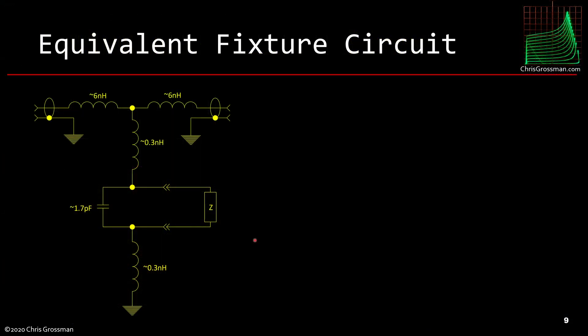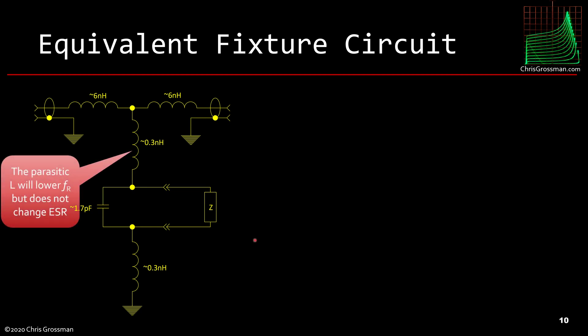So my initial guess as to what the fixture looks like is this. And it's just a guess based on some additional measurements I made, which I'll include in downloadable charts in the links below this video. And, you know, I could be off by a factor of 3 on any of these values pretty easily. So the parasitic L, it comes from, you know, the socket pins in the fixture. And it will lower the frequency resonance, the resonant frequency, but it doesn't change the ESR.